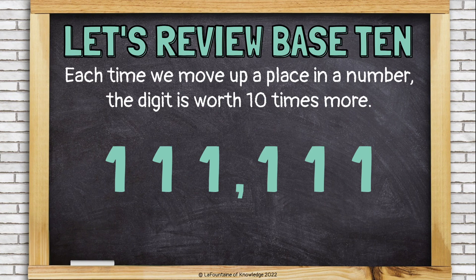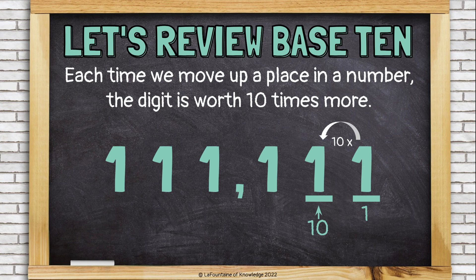Each time we move up a place in a number, the digit is worth 10 times more. This one in the ones place is just worth 1. But if we move it over to the left into the tens place, now it's worth 10. 10 is 10 times more than 1. If we move over again into the hundreds place, now the one is worth 100, which is 10 times more than 10.